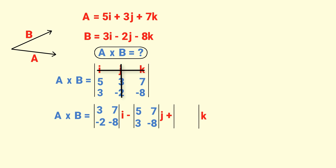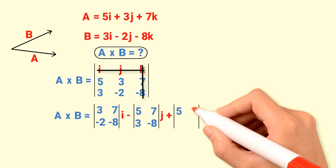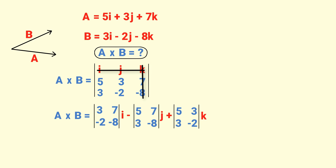Similarly, K is in the first row and third column. Cancel the first row and third column. What is left behind is 5, 3, 3, and minus 2, giving us the 2 by 2 matrix for the K unit vector.